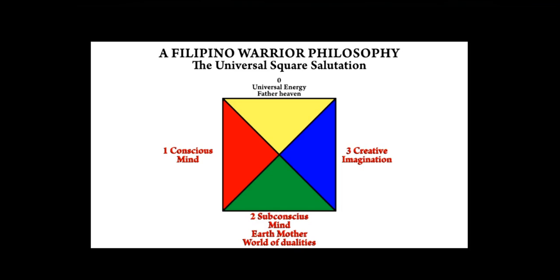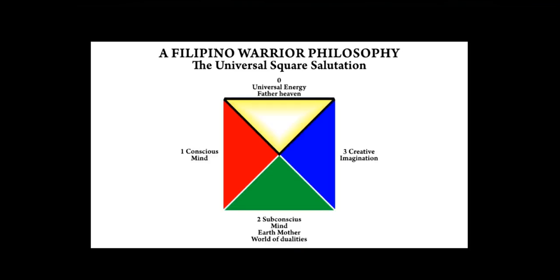Now let's look at the first triangle. The first triangle represents the universal energy that comes to us from Father Heaven. It is represented by the numerical zero, which we look at normally as meaning nothing. In reality, it means no one thing, but all things, and this includes all possibilities.